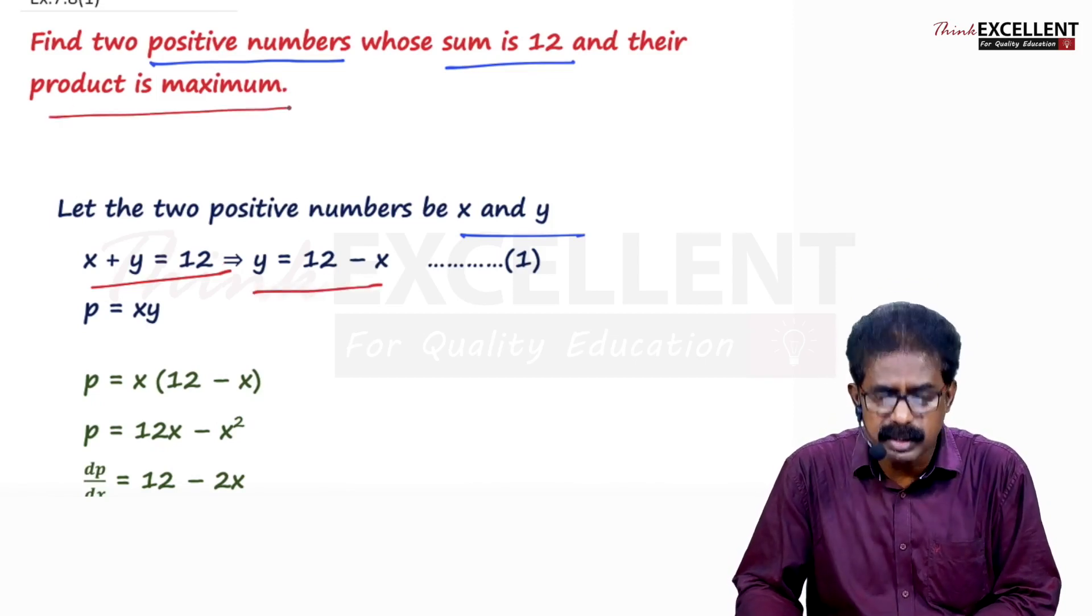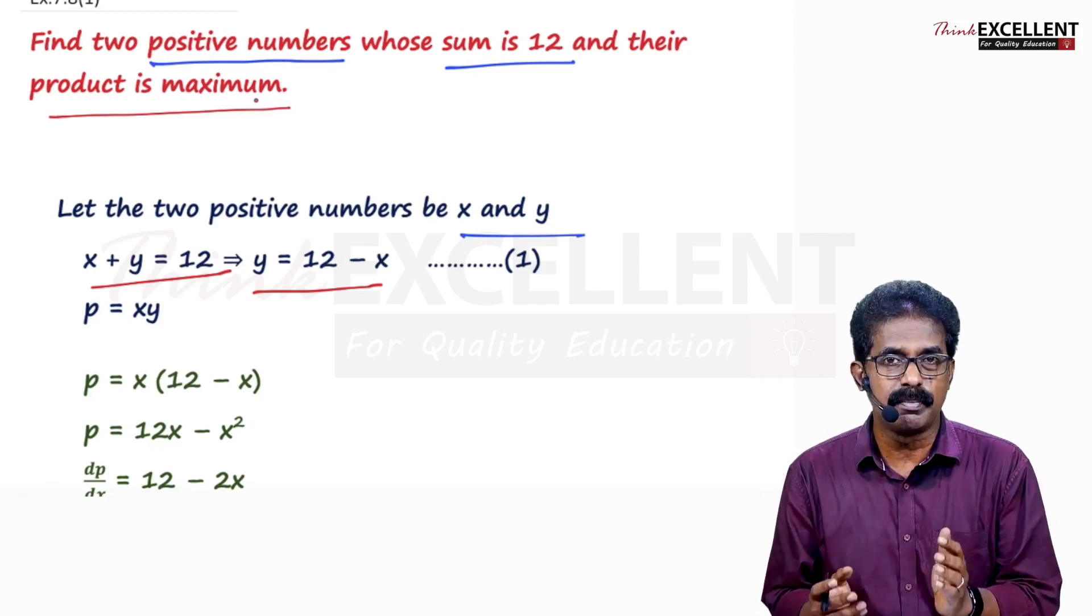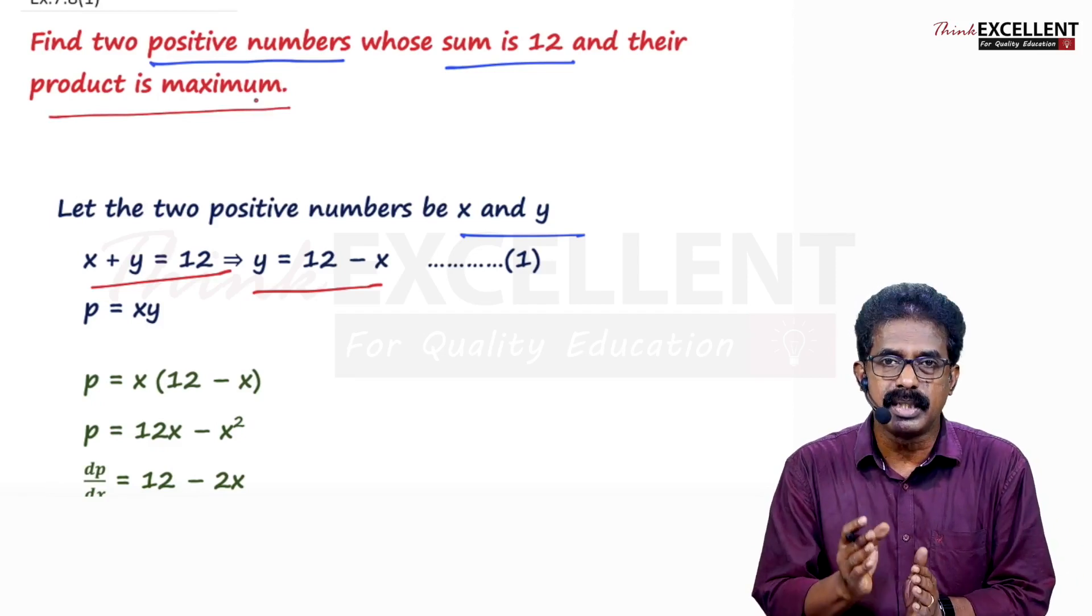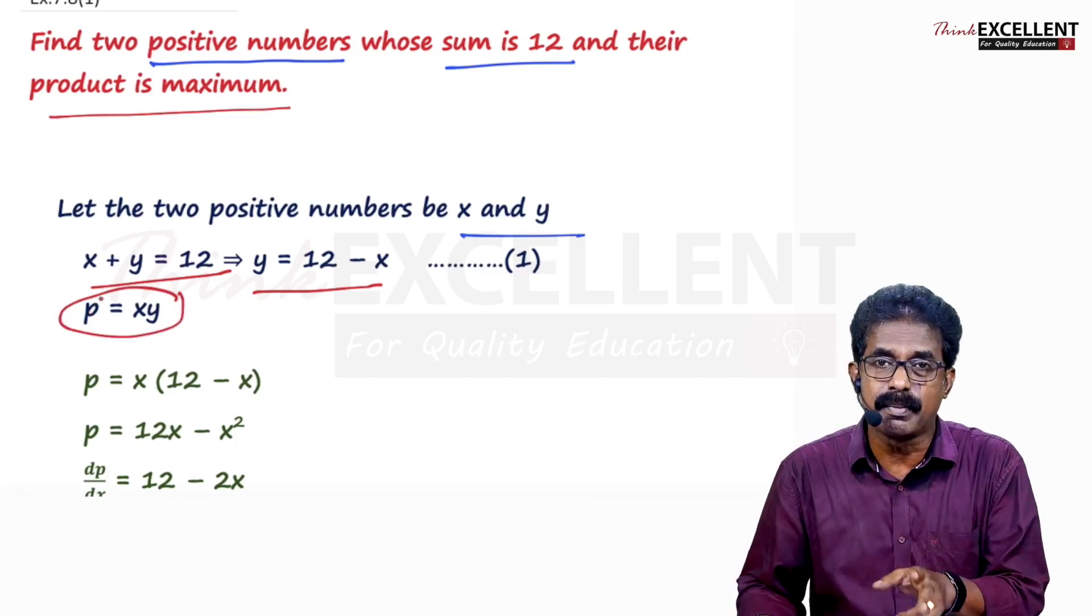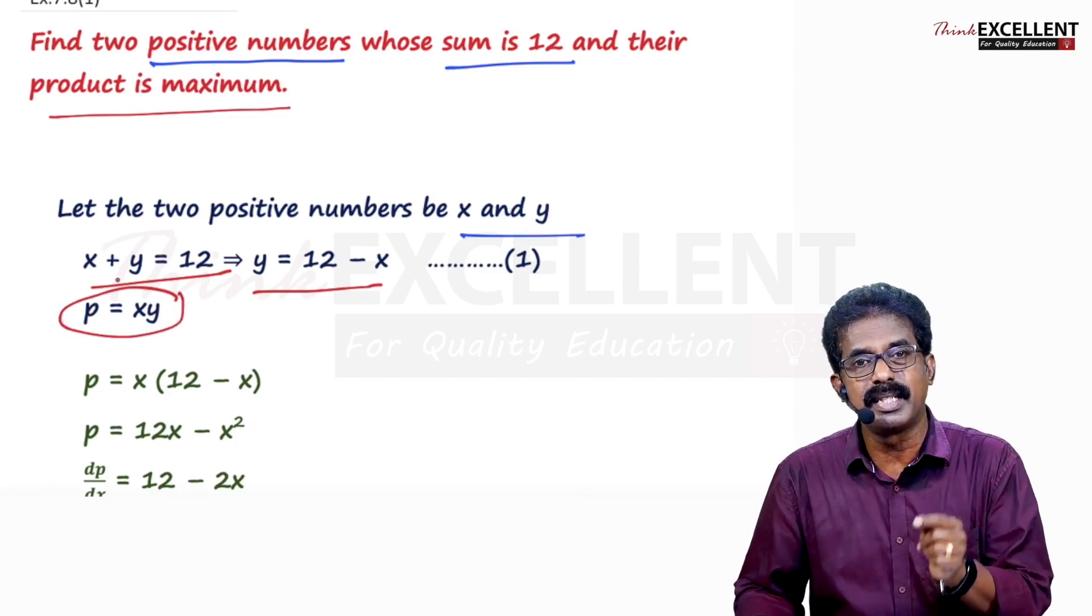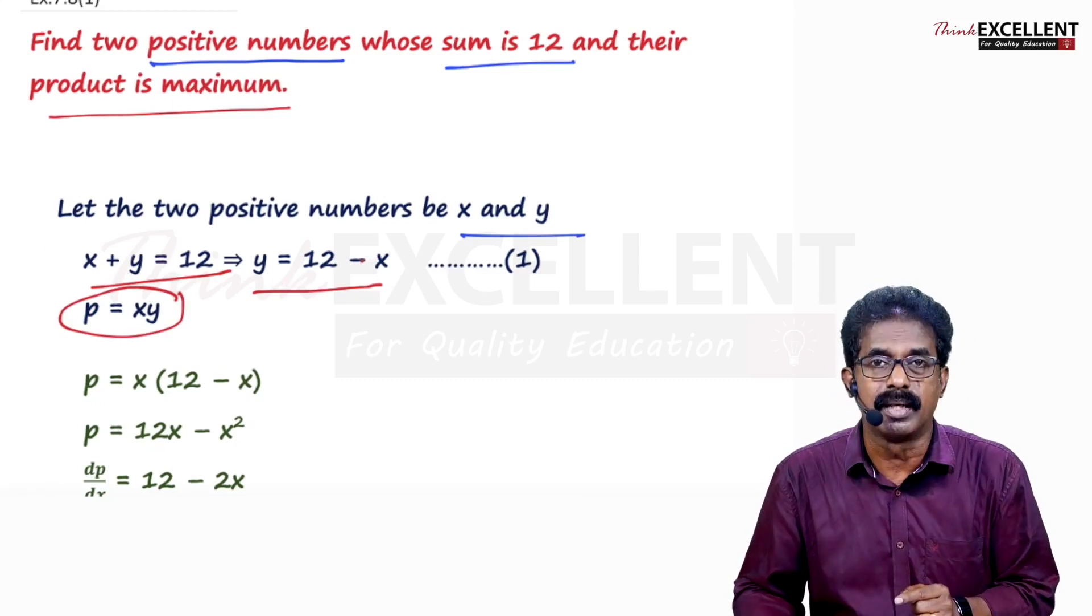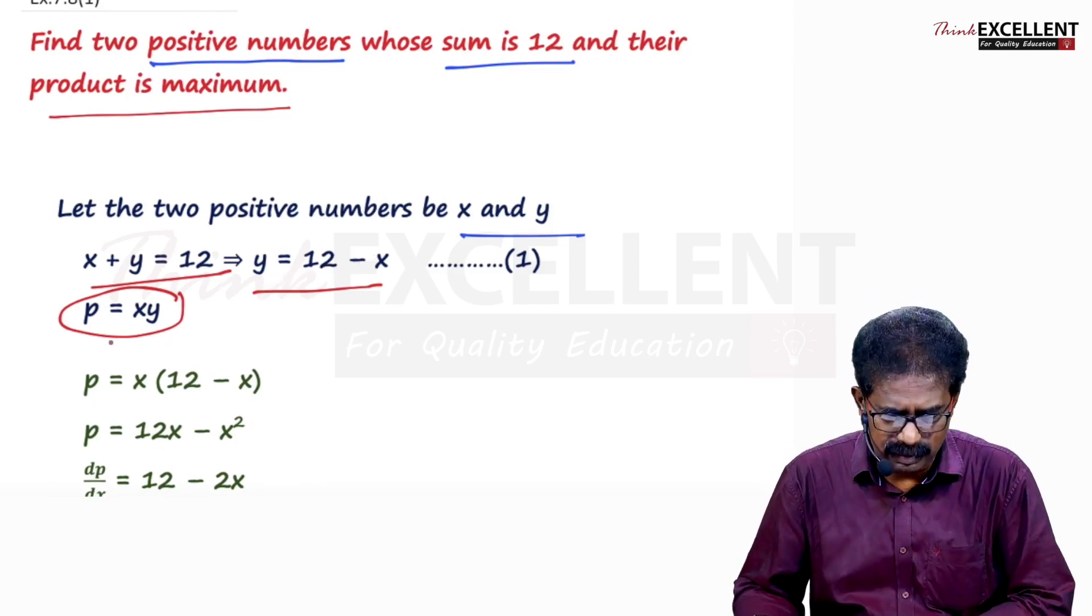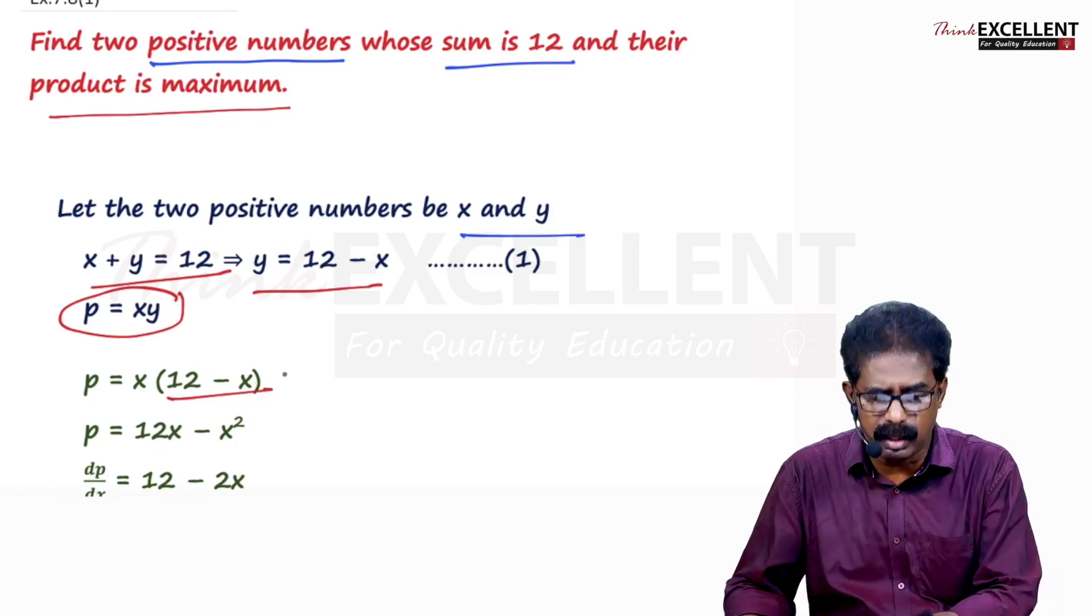And product is maximum. Product means you have to multiply. Which number? X and Y you multiply. Product is equal to X into Y. You can't take it because P is a function of 2 variables, X and Y. Convert it into a single variable. For that you make use of equation 1. So P equal to X into Y. Instead of Y you write 12 minus X.